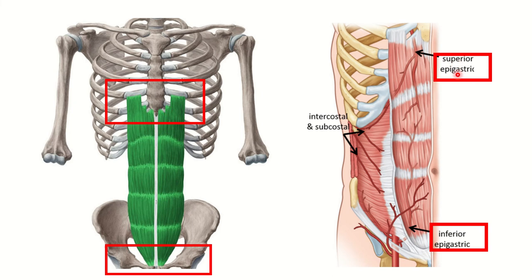The superior epigastric artery is branched from the internal thoracic artery and descends down. Here we can see the superior epigastric artery after entering into the rectus abdominis muscle descends down. On the other hand, we can see another artery arising from the external iliac artery which ascends upward, and we can see they meet at that place. So this rectus abdominis muscle is supplied by two epigastric arteries: the superior epigastric artery, arising from the internal thoracic artery, and the inferior epigastric artery, arising from the external iliac artery. It originates from the xiphoid process and some of the costal cartilages and terminates at the pubic tubercle and symphysis.